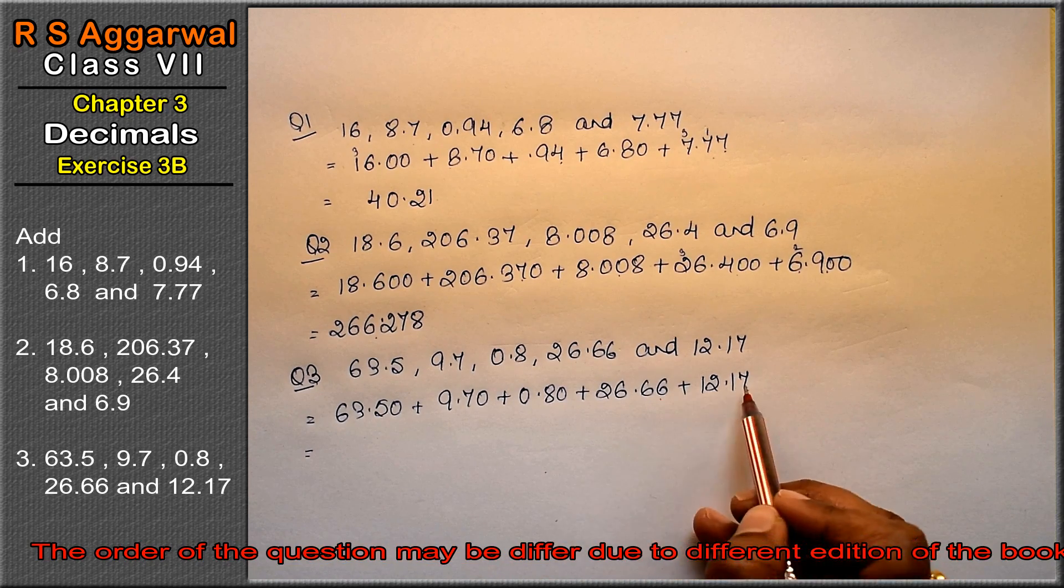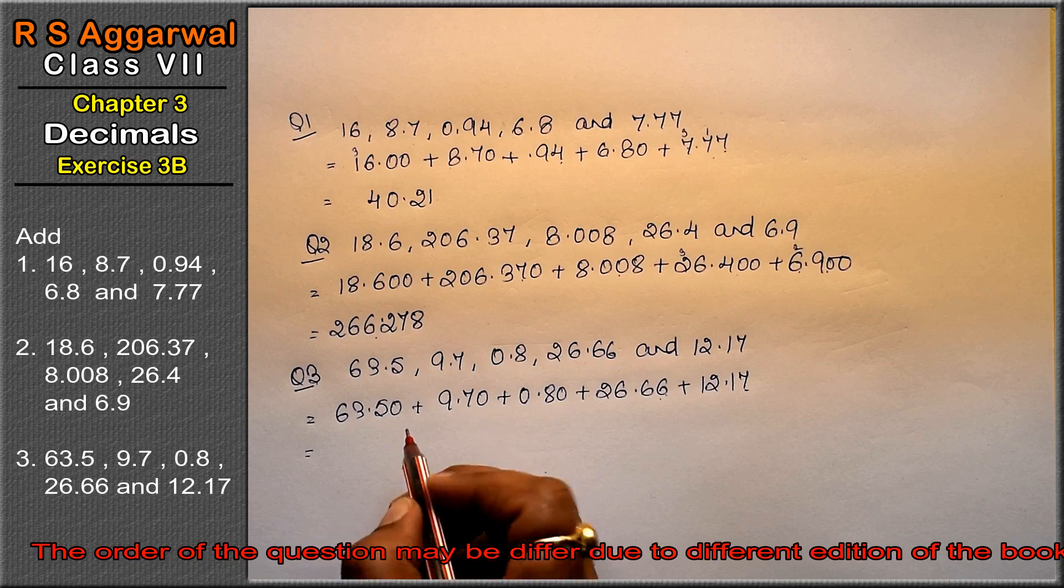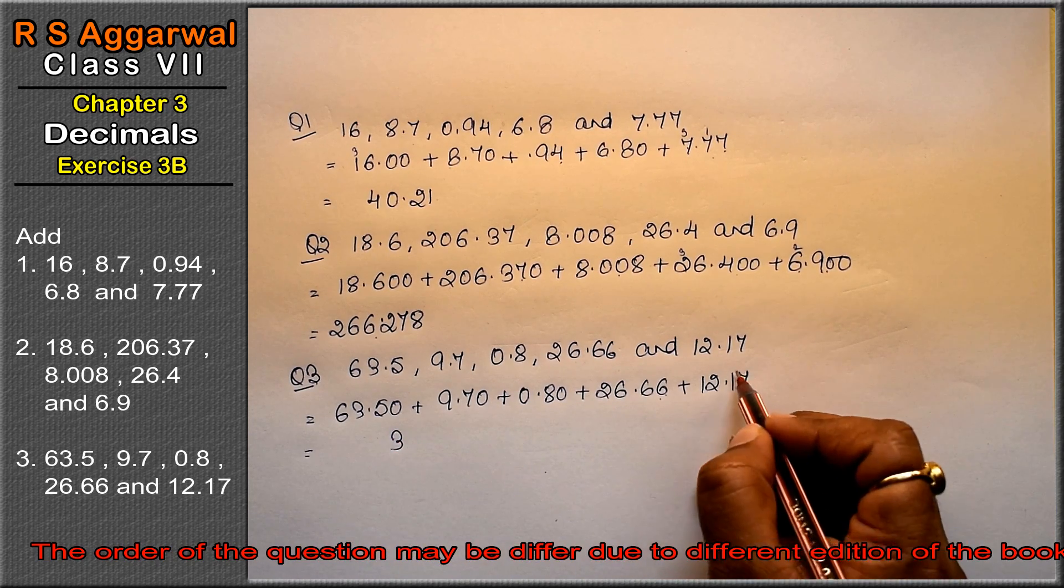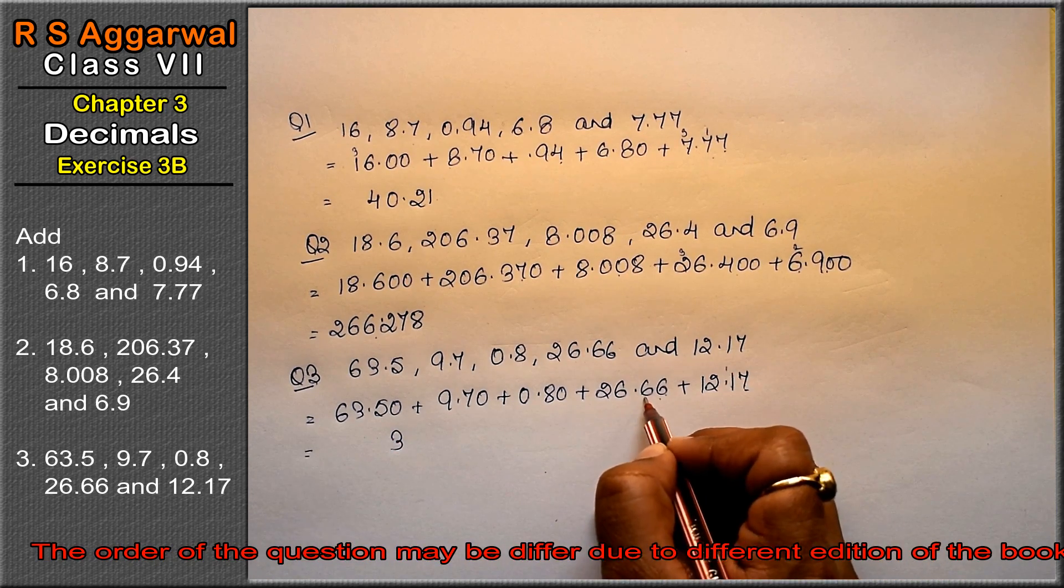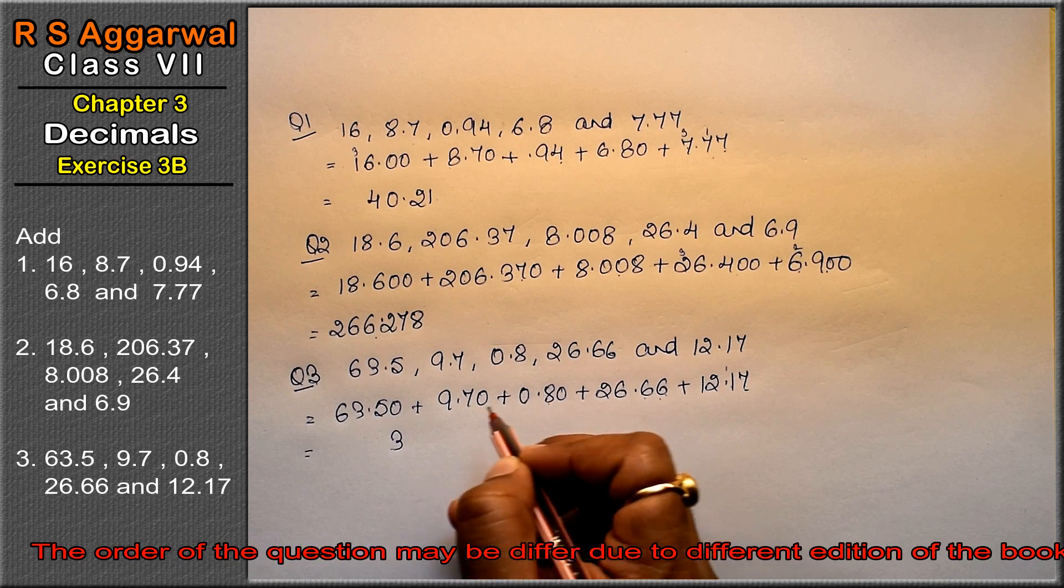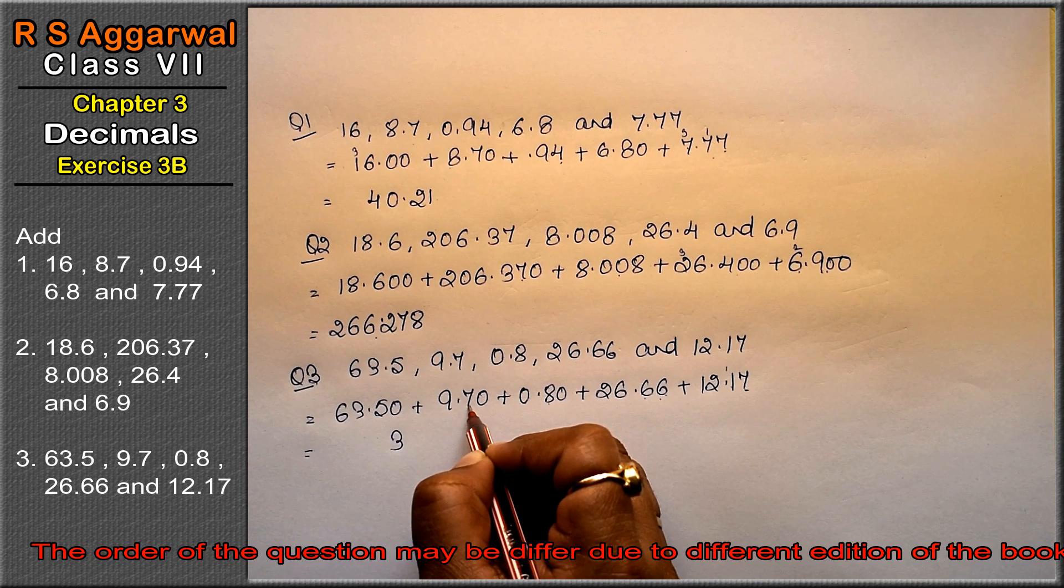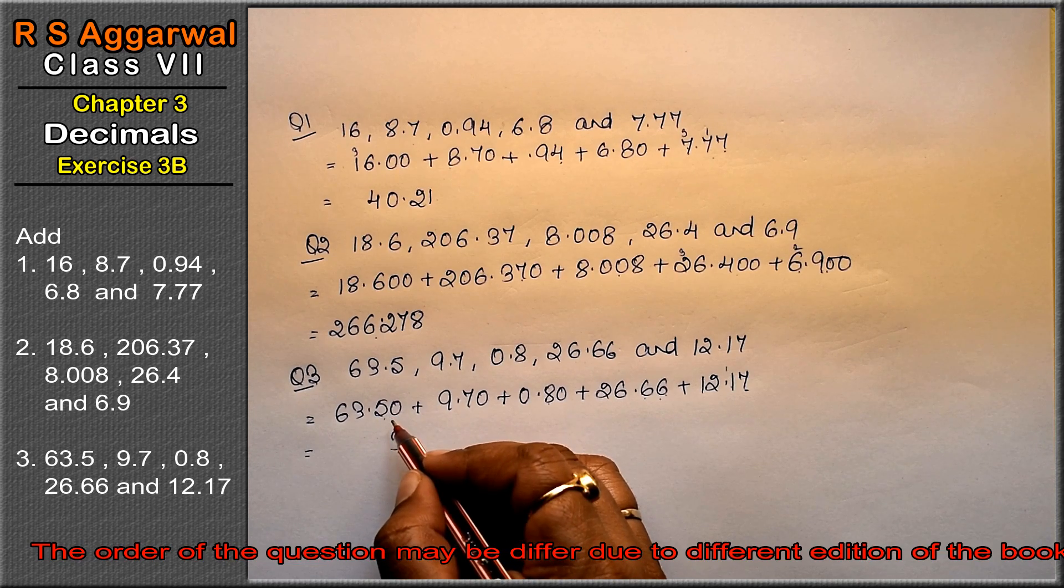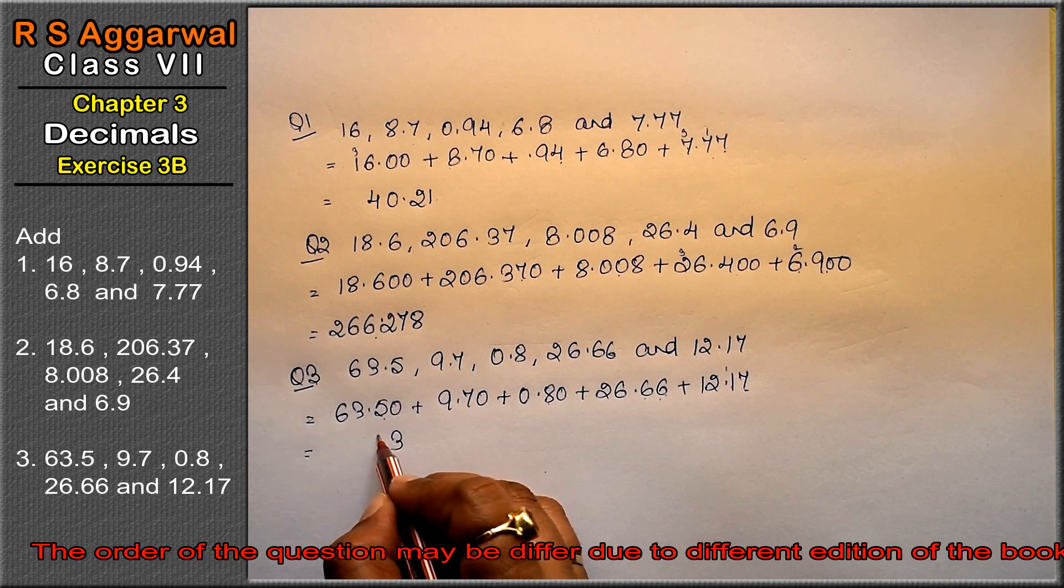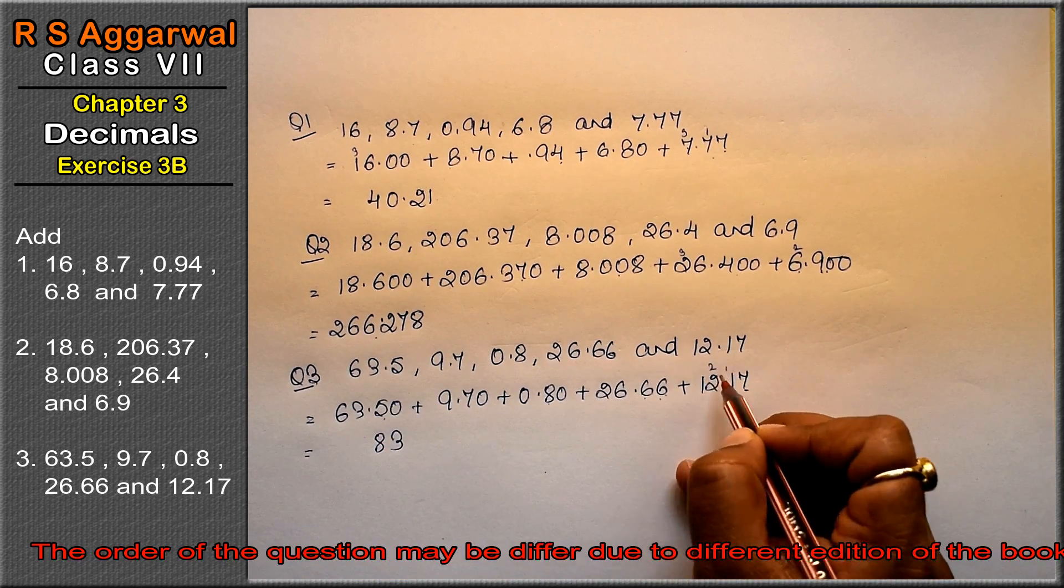6 plus 7 is 13, 13 ka 3 carry 1. 2, 8, 8, 8, 16, 17, 18, 19, 20, 21, 22, 23, 24, 25, 26, 27, 28. 2 carry 4.